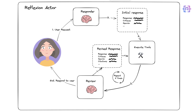Now let's see how these components interact in the reflection process. We have five steps: generate, reflect, evaluate, revise, and store. In the generate step, the actor generates an initial piece of content, such as a comic book idea or a script outline.